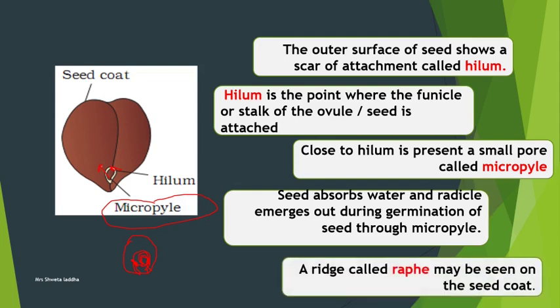A ridge called the raphe can be seen on the seed coat. The raphe is basically the remains of the vascular conducting strand which is present in the ovule.